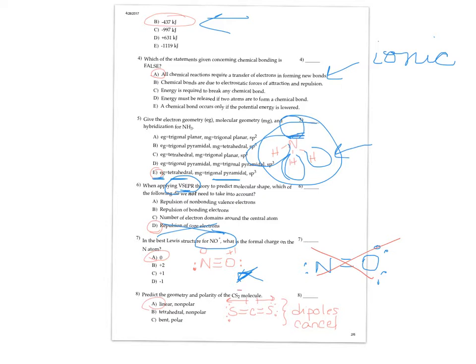Okay. The next one, CS2 is just like CO2. So if you draw the Lewis structure, you notice that it is in fact linear. And although each of the individual bonds are polar, the dipoles cancel out. They go in totally opposite directions. And so overall molecule is nonpolar.